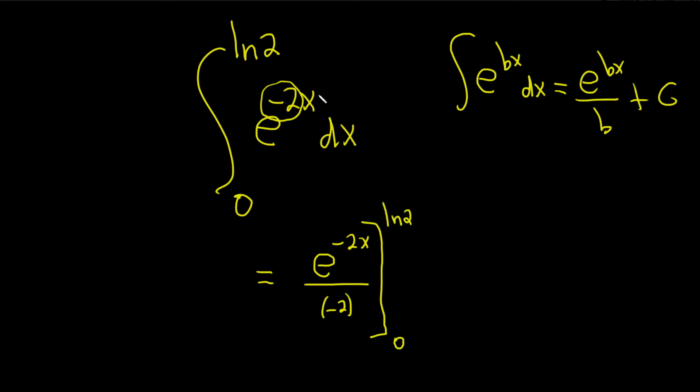So again, whenever it's a number times x like this, you just divide by the number. Let's clean this up. This is negative 1 half e to the negative 2x, and we're going from 0 to ln 2.